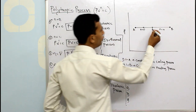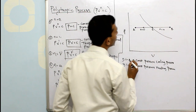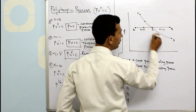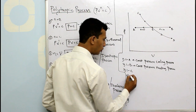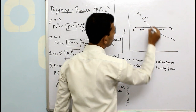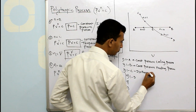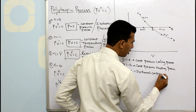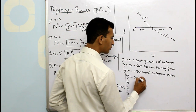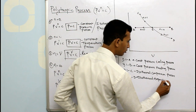For n equals to 1, you have a curve like this, with points C and D. From 1 to C is isothermal compression, also called the constant temperature compression process. From 1 to D is isothermal expansion, also called the constant temperature expansion process.